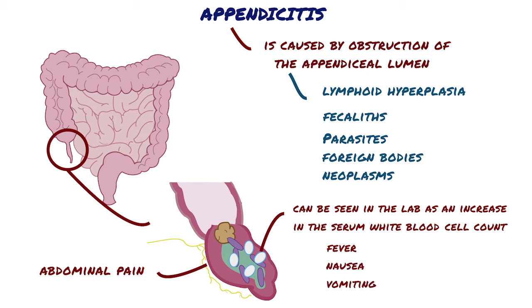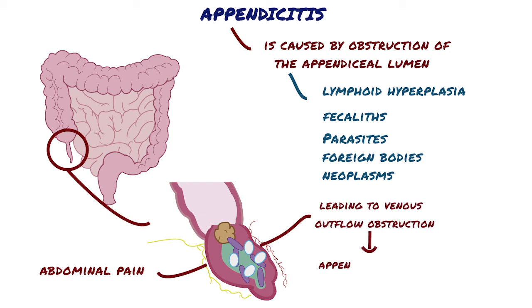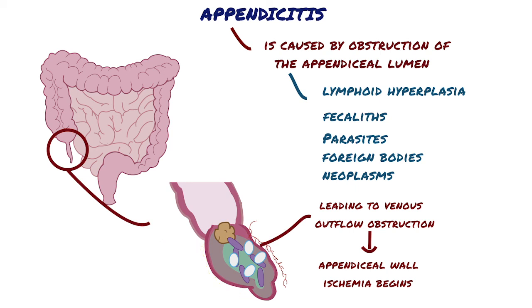If appendiceal obstruction persists, intraluminal pressure rises ultimately above that of the appendiceal veins, leading to venous outflow obstruction. As a consequence, appendiceal wall ischemia begins, resulting in a loss of epithelial integrity and allowing bacterial invasion of the appendiceal wall. As more cells die, the appendiceal walls become weaker and weaker, and for a small proportion of patients, to the point where the appendix ruptures. Rupture of an infected appendix allows the bacteria to escape and get into the peritoneum, and patients often experience peritonitis.